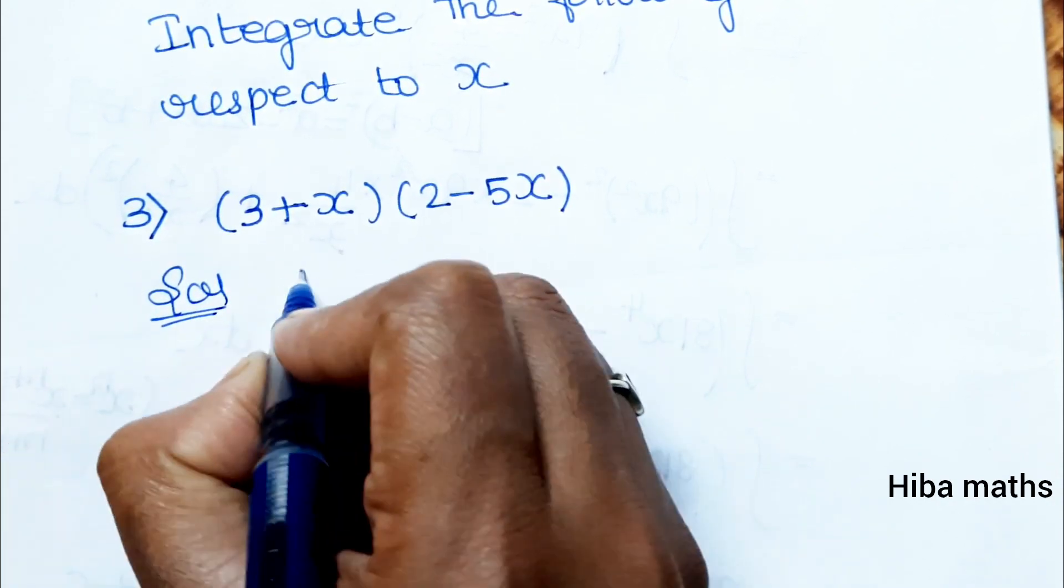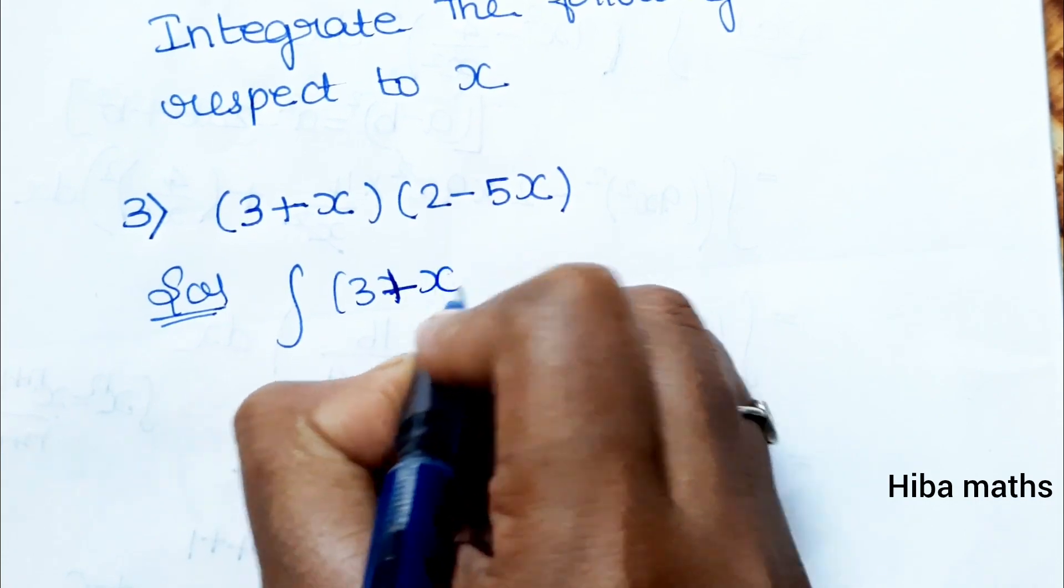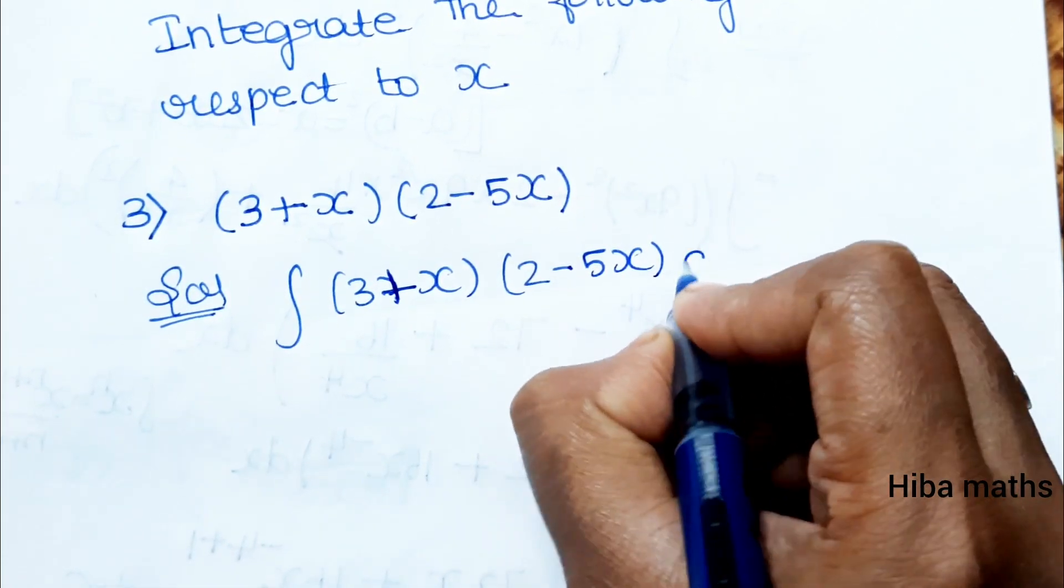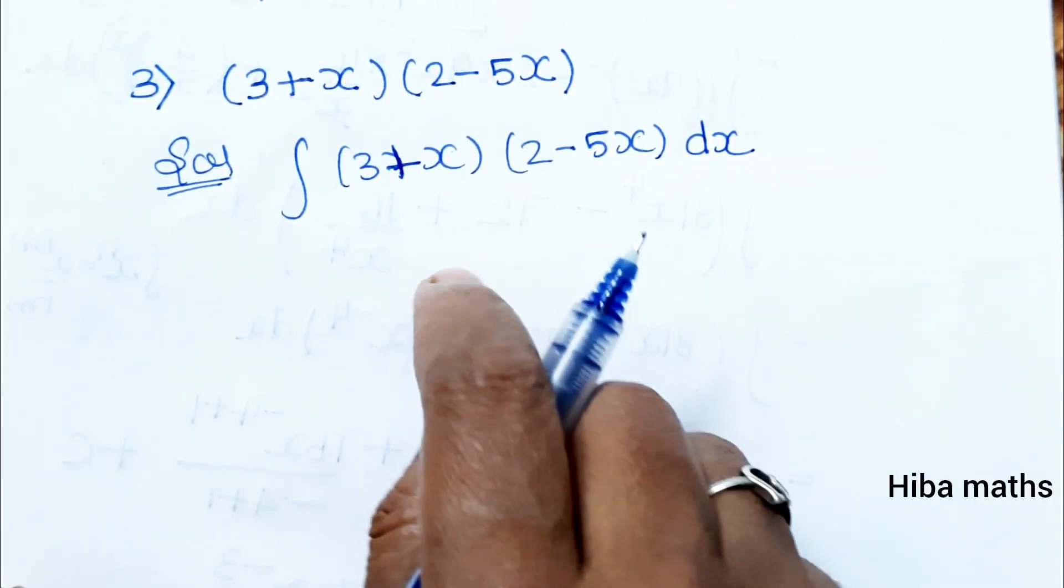We will do the integration of (3 + x)(2 - 5x) dx. If we solve this problem, we will multiply inside.